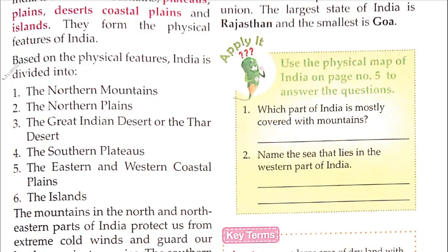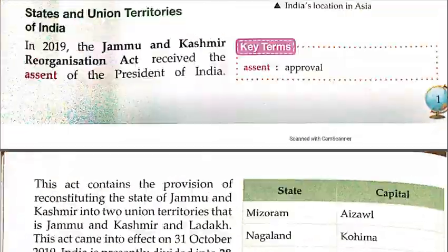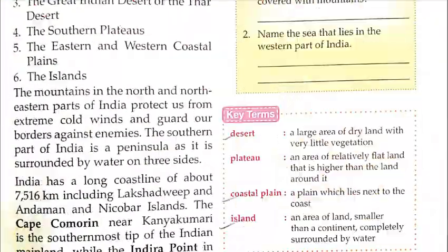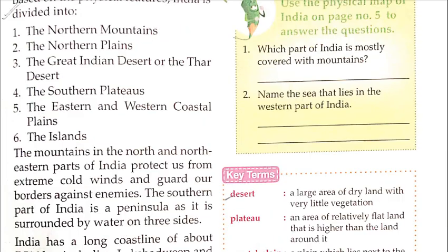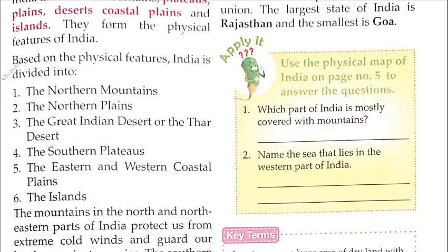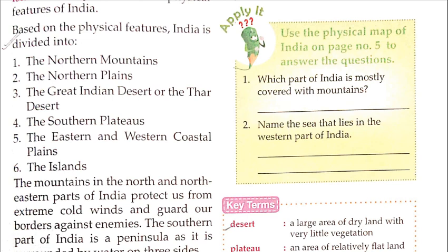Use the physical map of India on page 5 to answer the questions. Which part of India is mostly covered with mountains? As we read, the North and North-East area has the most mountains, so you will write 'North and North-East.' Name the sea that lies in the western part of India — that is the Arabian Sea, so you will write Arabian Sea.